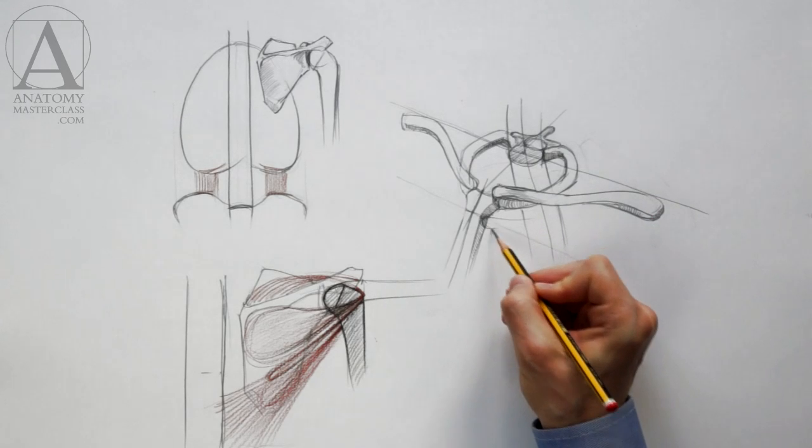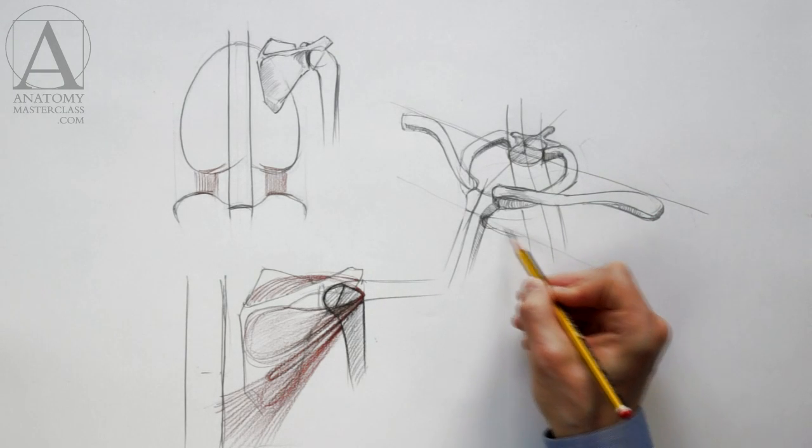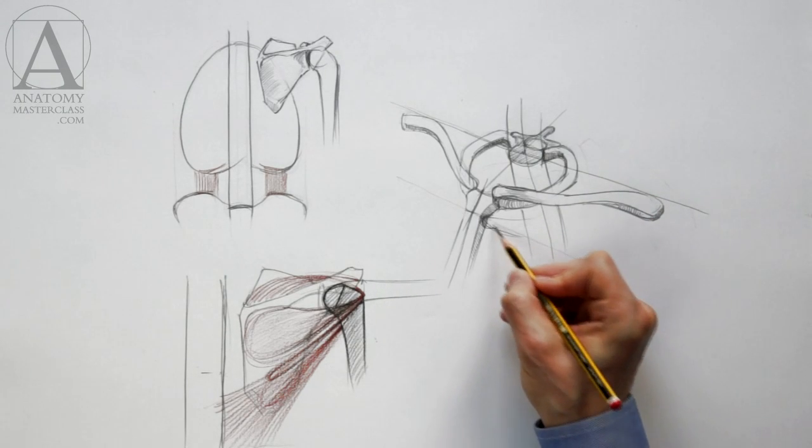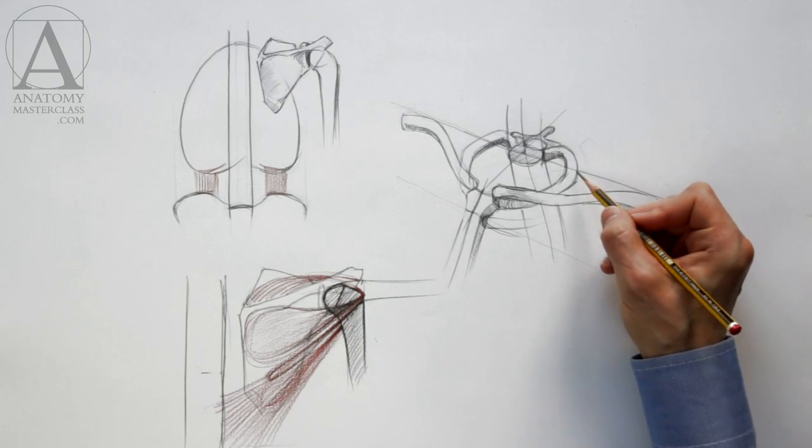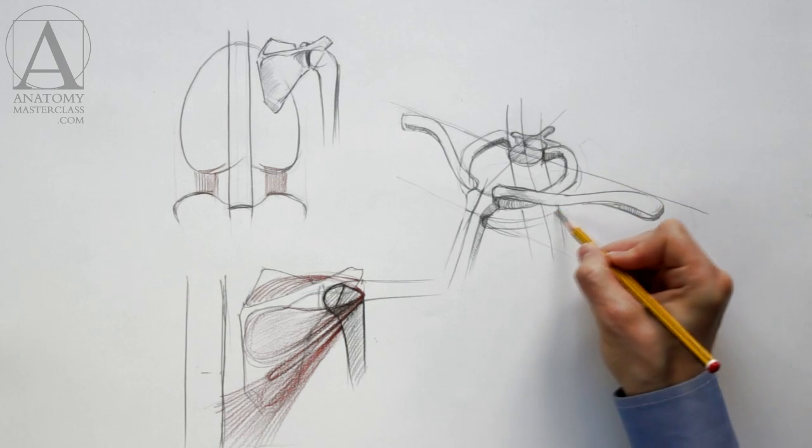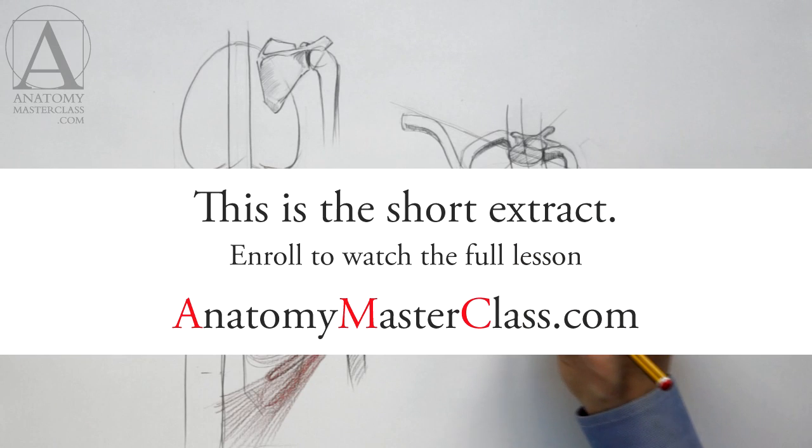The second rib connects to the breast bone at the point between the manubrium and the body of the sternum. The second pair of ribs is wider than the first one. This pair connects to the second thoracic vertebra.